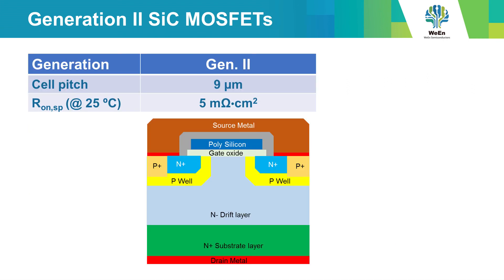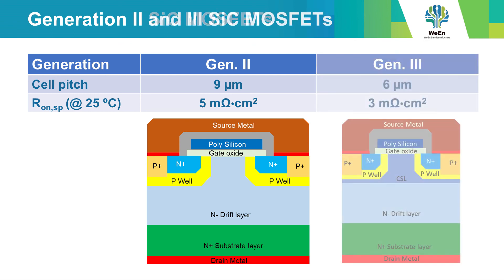The Wien silicon carbide MOSFETs are produced in generation 2 or 3. The main difference is the cell pitch and an adapted drift layer. This results in about 40% lower RDS(on).